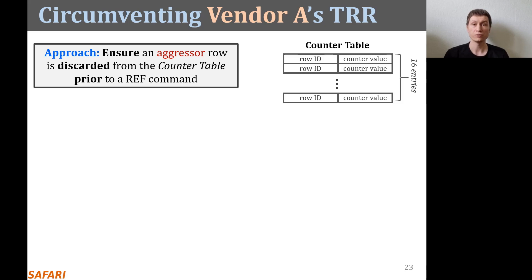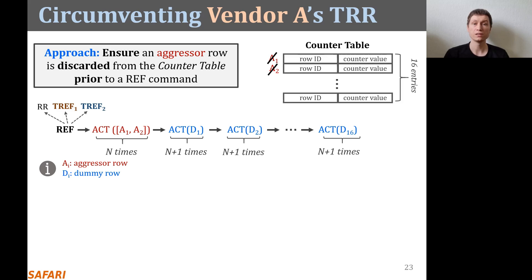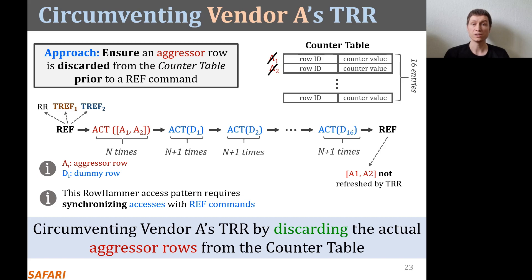Based on these observations, we crafted new RowHammer access patterns that circumvent vendor A's TRR mechanism. Our approach is to have the attacked aggressor row discarded from the counter table prior to a TRF1 refresh command. Immediately after a refresh command, we hammer two rows A1 and A2 that are one row apart to perform a double-sided RowHammer attack, each hammered N times. Then, to discard A1 and A2 from the counter table, we hammer 16 different dummy rows N+1 times each. By hammering dummy rows more than the aggressor rows, we make TRR replace A1 and A2 in the counter table with the dummy rows, preventing TRR from detecting the aggressor rows. It is important to synchronize accesses with refresh commands to perform aggressor and dummy row hammers at the right time.